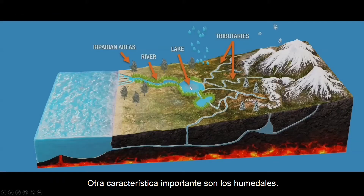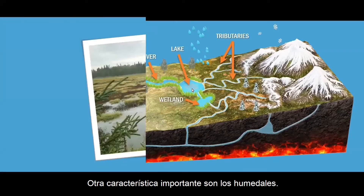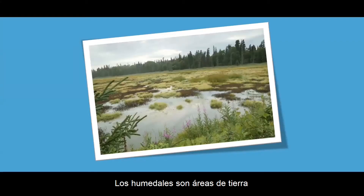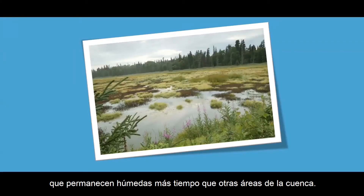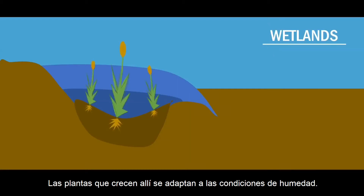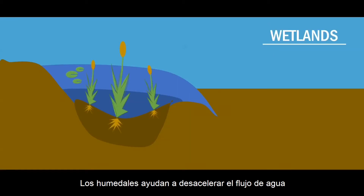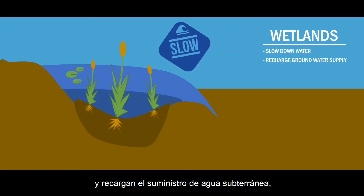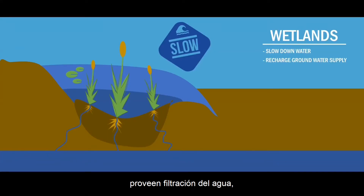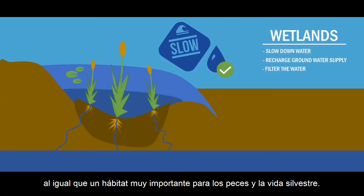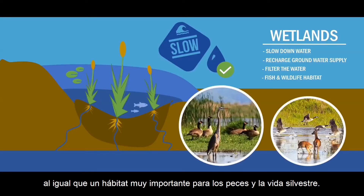Another important feature are wetlands. Wetlands are areas of land that stay wet longer than other areas in the watershed. Plants that grow there are adapted to wet conditions. Wetlands help slow down the flow of water and recharge the groundwater supply. They provide filtering of the water as well as very important fish and wildlife habitat.